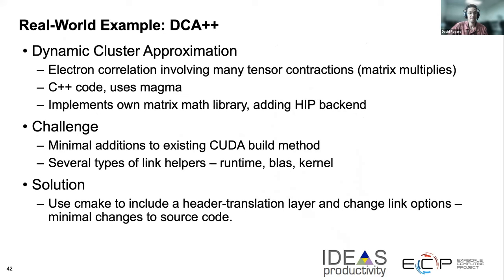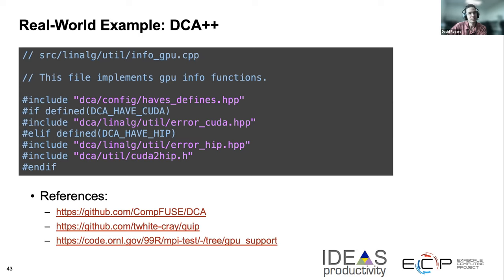I'm picking out examples of build processes for packages trying to achieve performance portability. The first is DCA++ — dynamic cluster approximation for correlated electron structure. It's a C++ code that does a lot of matrix multiplies, depends on the MAGMA code, and has its own matrix math library for special operators. They want to go from CUDA and add a HIP backend with minimal changes. The solution is to reuse as much CUDA code as possible. What they've done is included the CUDA-to-HIP library from ROCm/hipcub, which takes every CUDA malloc call and turns it into a HIP malloc — basically by #defining CUDA_malloc as HIP_malloc.